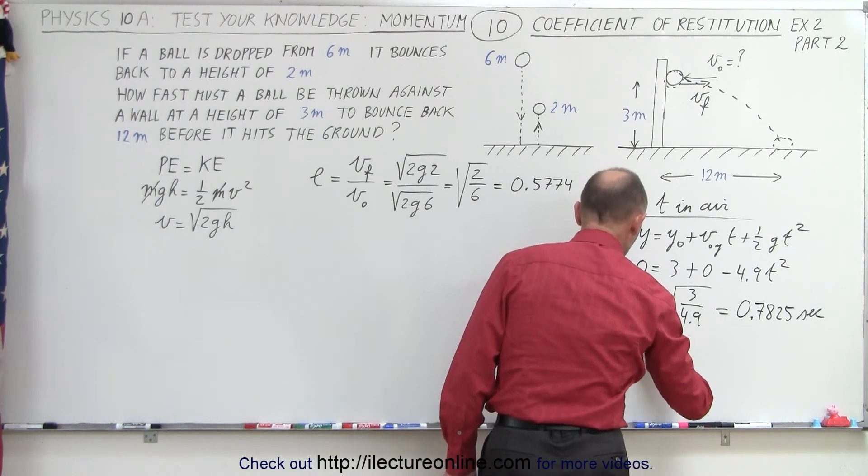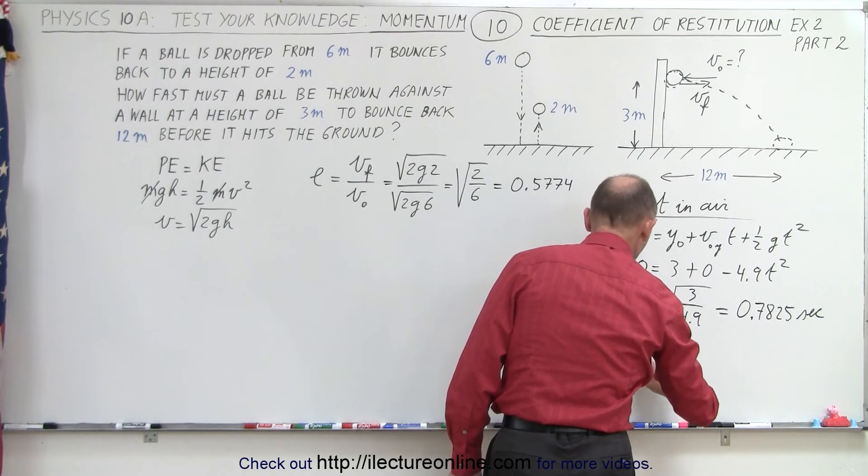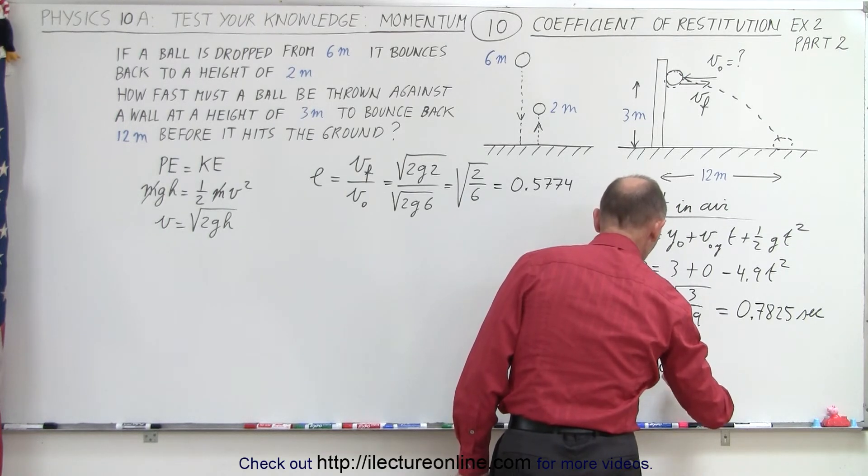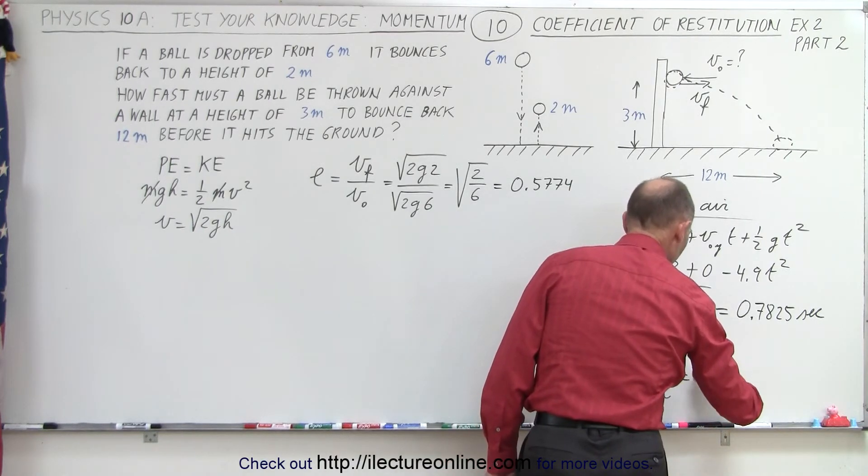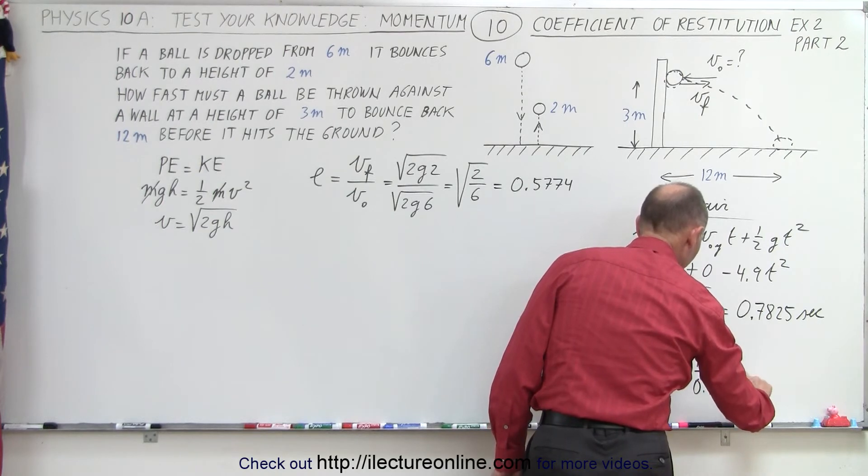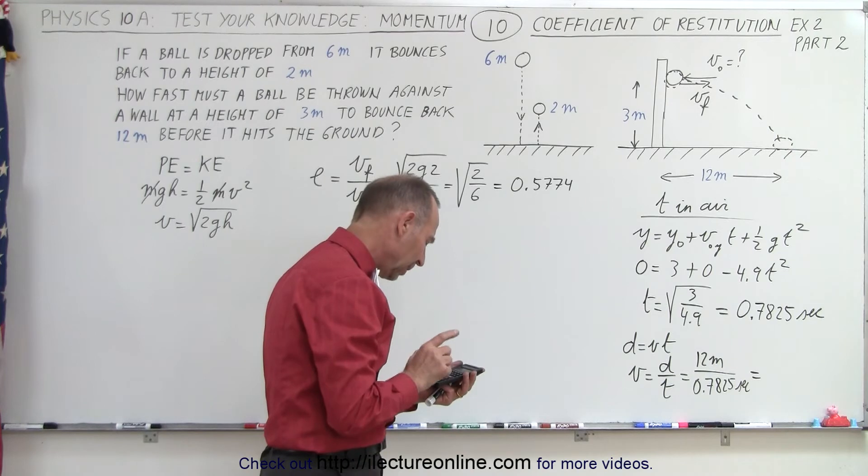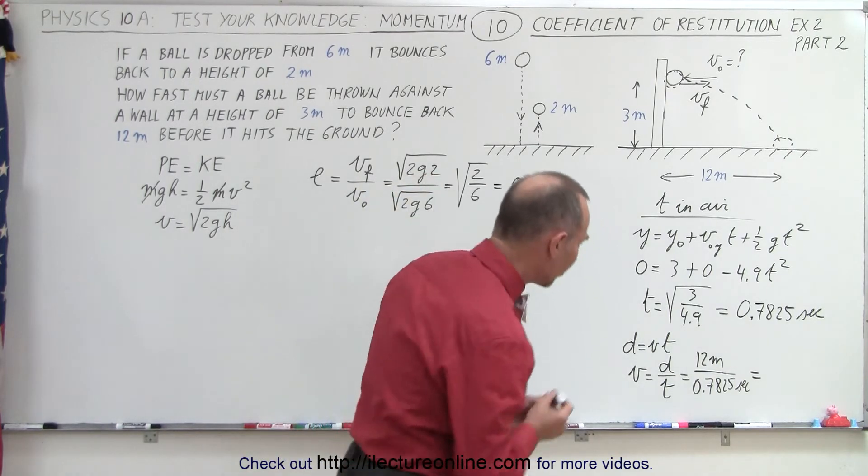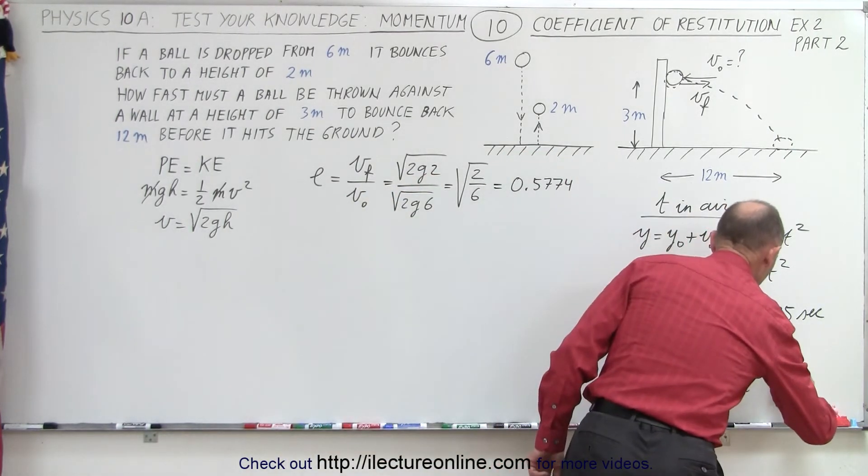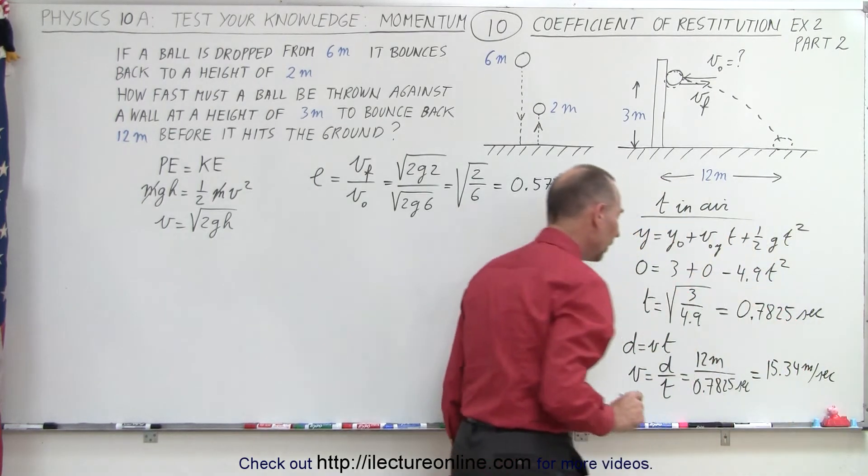So we can say that distance equals velocity times time. Or velocity is equal to distance divided by time, which is equal to 12 meters divided by 0.7825 seconds. So we need a speed of 15.34 meters per second. 15.34 meters per second.